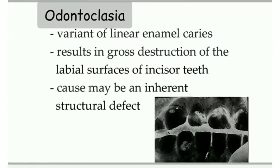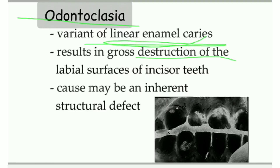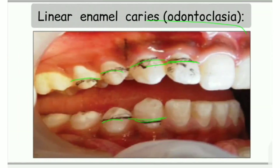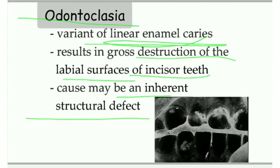Odontoclesia is a variant of linear enamel caries that results in gross destruction of the labial surfaces of the incisor teeth, caused by an inherited or structural defect. It also occurs in children and involves the same incisors, but the whole area gets involved — not just one linear area of destruction. It is usually due to inherited conditions.